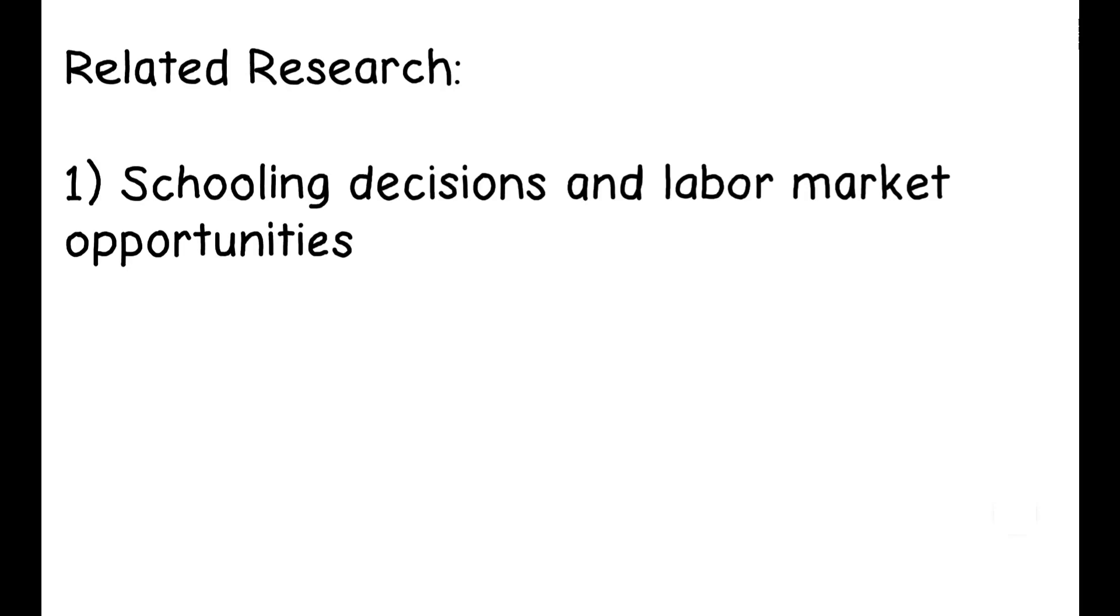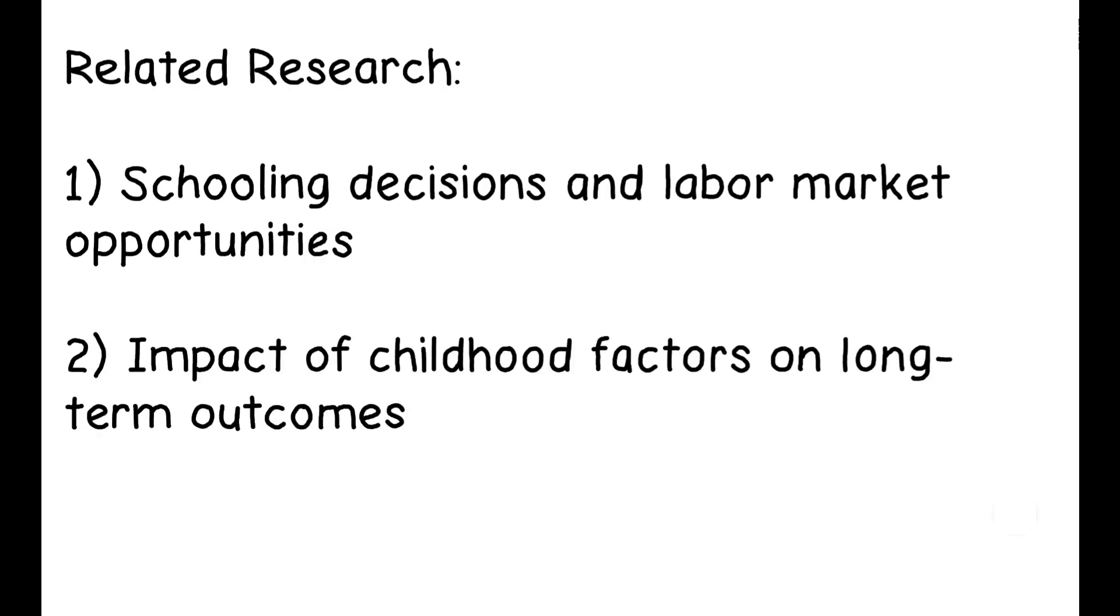To read more on this topic, you can check out the full paper and its references to other related research. These include papers studying how schooling decisions are affected by changes in labor market opportunities, work on the importance of location and other childhood factors on long-term outcomes, and finally, a broad literature studying crime and illegal markets.